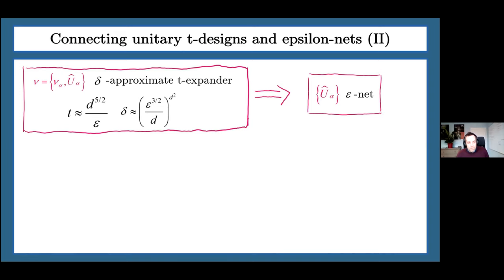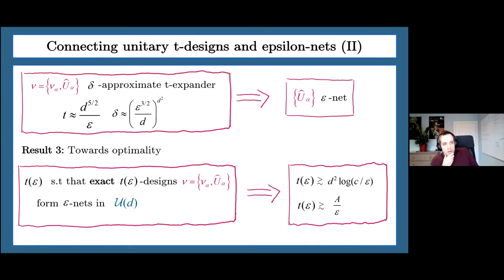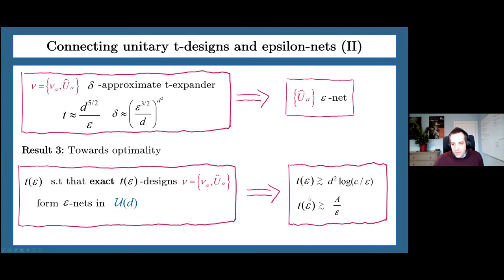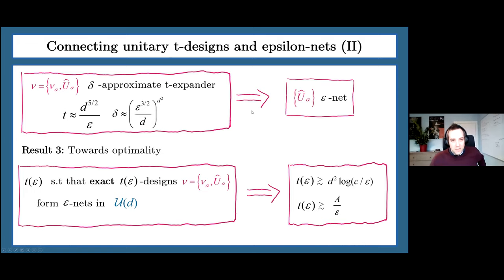One can wonder whether there is some optimality in our results, and to some extent there is. If t(epsilon) denotes the degree of an exact design such that the t(epsilon)-design forms an epsilon net, then there are lower bounds: for fixed epsilon it must scale at least like d², and for fixed dimension it must scale at least like 1/epsilon. So the dependence on epsilon is tight. The dependence on d can probably be improved, and we hope it can be improved to d².